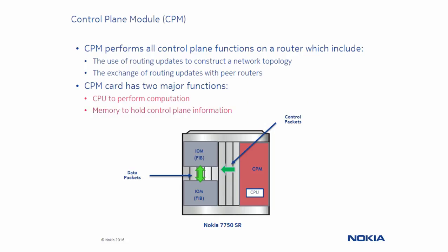This is why it is very important that the CPM module is protected from attacks, unwanted packets, and unauthorized access that can degrade the performance of the 7750 service router, or even make it unavailable.